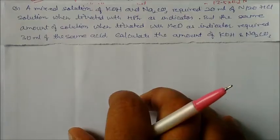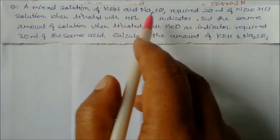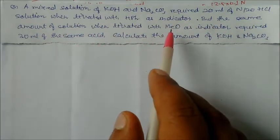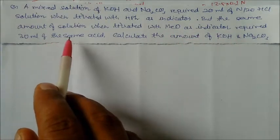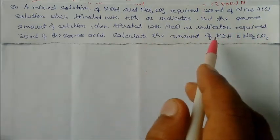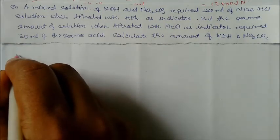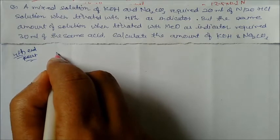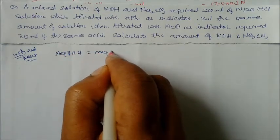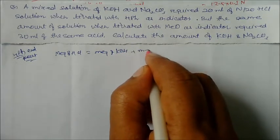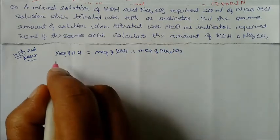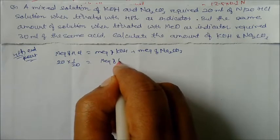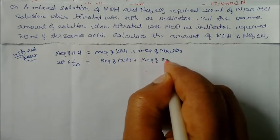Next problem: a mixed solution of potassium hydroxide and sodium carbonate required 20 mL of N/20 acid when titrated with phenolphthalein as indicator, and 30 mL of the same acid when titrated with methyl orange. Calculate the amounts of KOH and Na₂CO₃. For phenolphthalein endpoint: milliequivalents of HCl = milliequivalents of KOH + milliequivalents of Na₂CO₃. This gives 20 × (1/20) = 1.